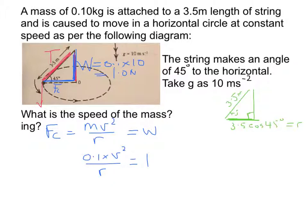So if I come back to my equation that I have here, I'm going to rearrange this a little bit. And I'm going to multiply both sides by the radius, which will cancel that down. And that will tell me that we have 0.1v squared is equal to 1 times the radius, which is 1 times 3.5 cos of 45 degrees. Now the next thing we need to do is divide both sides by 0.1, or multiply both sides by 10, which is the same deal. So v squared will be equal to 3.5 cos of 45 over 0.1.